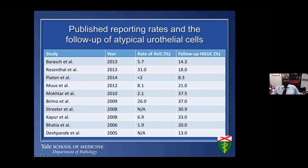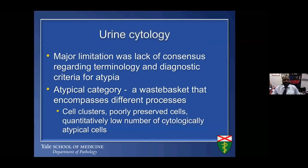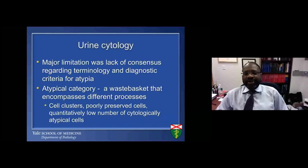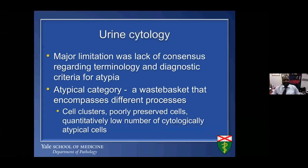After that, most people started to use the atypical category very liberally, which accounts for the wide difference in rates reported in the literature. The rates of atypical urothelial cells in urine vary from 2% to 31% in various studies. The incidence of high-grade urothelial carcinoma in patients with urothelial atypia varies from 8% to 37%. The major limitation was the lack of consensus regarding terminologies and the diagnostic criteria for atypia. As such, the atypical category was used as a wastebasket encompassing different processes—cell clusters in voided urine, poorly preserved cells, or a low number of atypical cells.